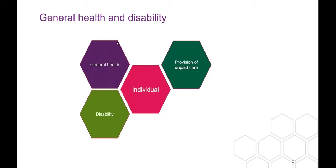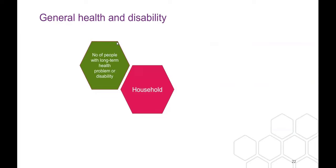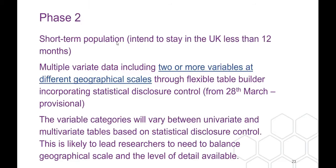For general health and disability, we get a self-assessed questionnaire on people's health, whether they're disabled, and whether they provide unpaid care. Health deprivation is picked up from the measures in general health and disability. At the household level we get the number of people with long-term health problems or disability. That was Phase 1 — all the data we have available now.